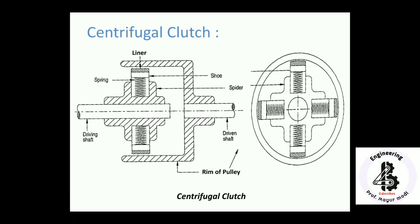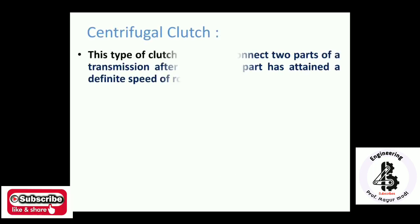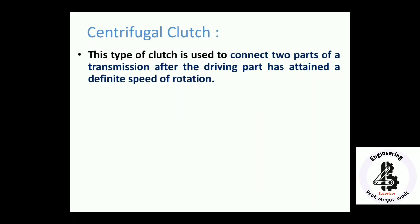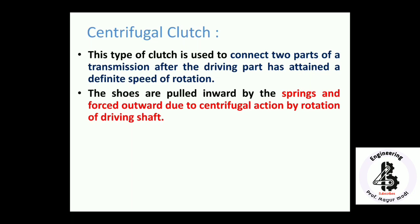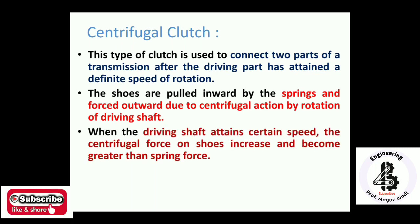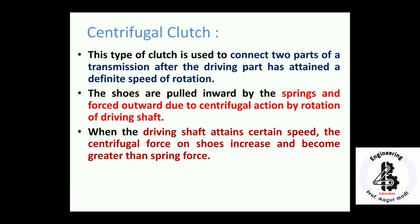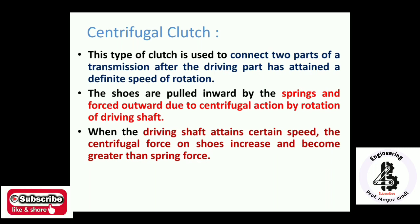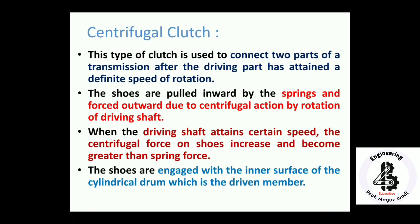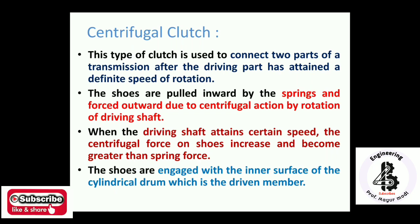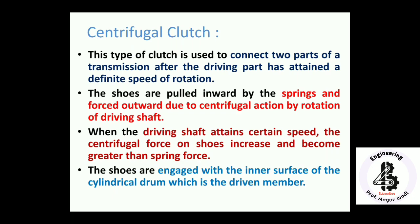In a centrifugal clutch, this type of clutch connects two parts of a transmission after the driving part has attained a defined speed of rotation. The shoes are pulled inward by springs and forced outward due to centrifugal action from the rotation of the driving shaft. When the driving shaft attains a certain speed, the centrifugal force on the shoes increases and becomes greater than the spring force. The shoes then engage with the inner surface of the cylindrical drum, which is the driven member.